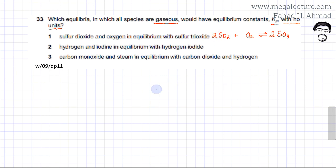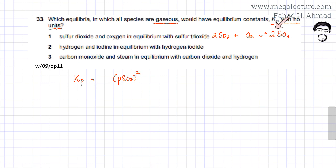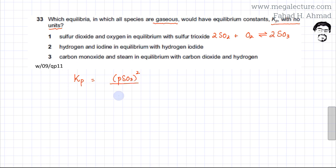Now I'll write the expression for Kp for this first reaction. It's the product's partial pressure of SO₃ squared — because the coefficient is 2 — divided by the partial pressures of the reactants: SO₂ squared and O₂. So Kp = P(SO₃)² / [P(SO₂)² × P(O₂)].